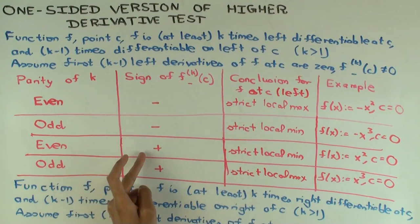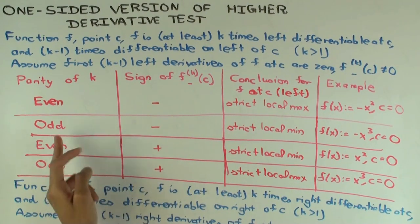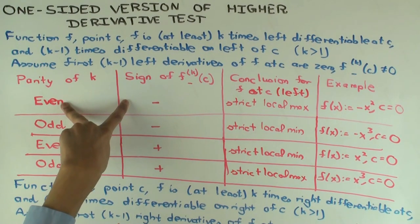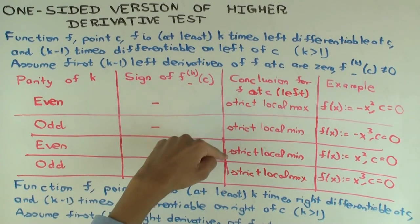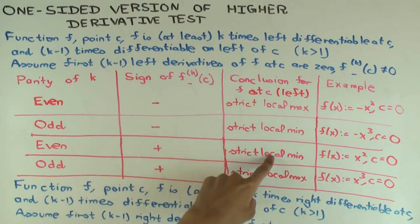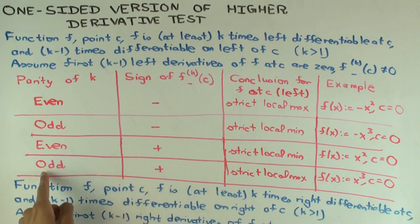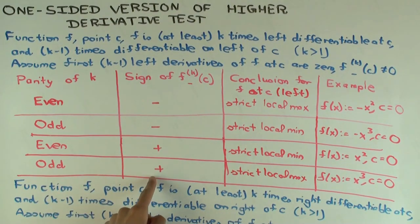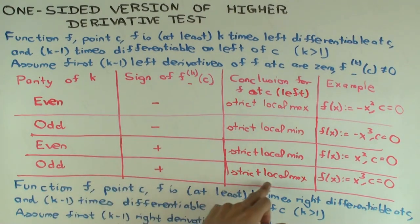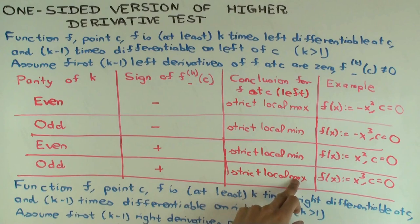Even and positive: you're doing the procedure the same number of times as even and negative, but starting out the opposite way, so you end up with the opposite behavior — strict local min instead of strict local max. Odd and positive has similar behavior to odd and negative but starting opposite, so you also end up opposite — strict local max.